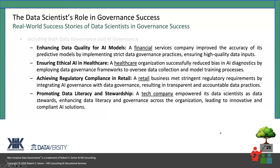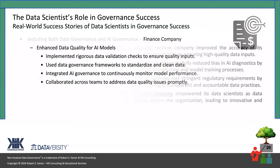The last thing I want to talk about: I want to run through four examples of organizations from different industries that have used their data scientists in implementing governance success — the governance success of their AI models as well as their data models. The first is a financial services company focused on improving the accuracy of its predictive models. In healthcare, they were looking to reduce bias in their diagnostics. In retail, they wanted to meet stringent regulatory requirements. And in a tech company, they wanted to promote data literacy, data awareness, and data stewardship across the organization.